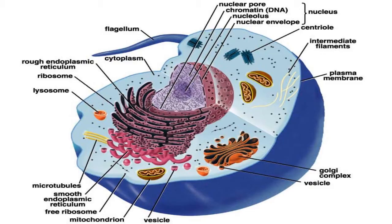In eukaryotes, ribosomes are made of four strands of RNA. In prokaryotes, they consist of three strands of RNA. Each plant cell has a large single vacuole that stores compounds, helps in plant growth, and plays an important structural role for the plant.